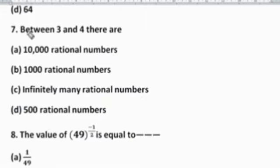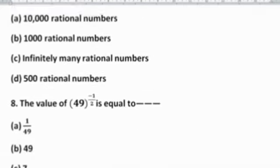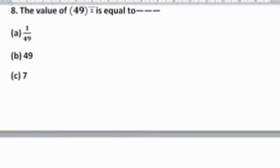Question 7: Between 3 and 4 there are — Option A: 10,000 rational numbers, Option B: 1,000 rational numbers, Option C: infinitely many rational numbers, Option D: 500 rational numbers. Always remember: between any two numbers we can insert infinitely many rational numbers. So Option C is the right answer. You just have to remember this orally — infinitely many numbers can be inserted between two numbers.